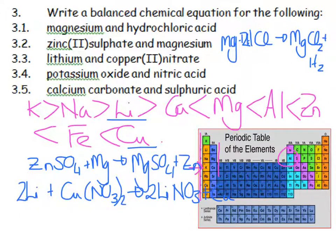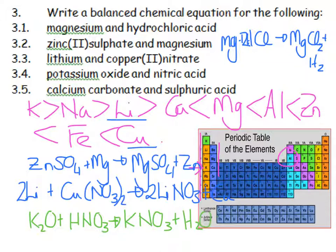Potassium oxide and nitric acid, any metal oxide and an acid is going to give me a salt plus water. So it's going to be potassium nitrate. Sorry, that's an arrow, not a plus. And water, H2O, and I'm going to need to put a 2 there and a 2 over there.